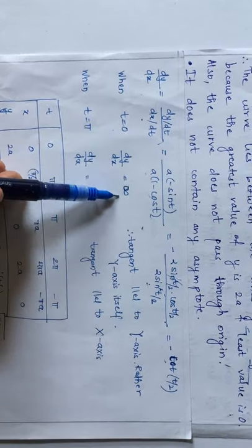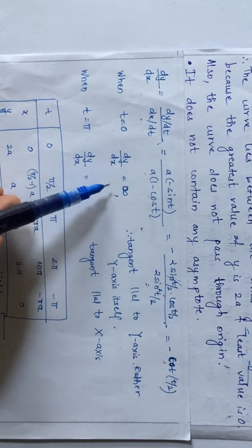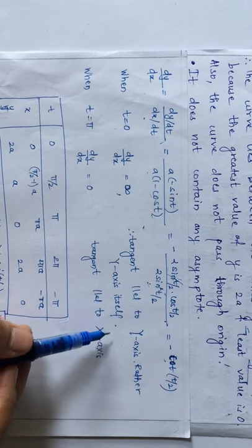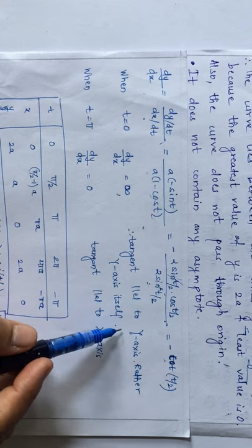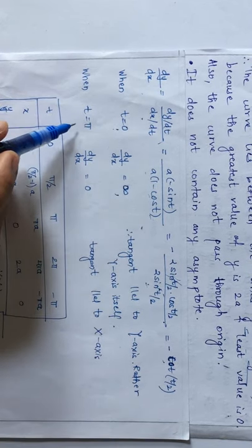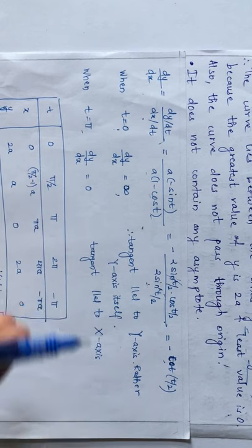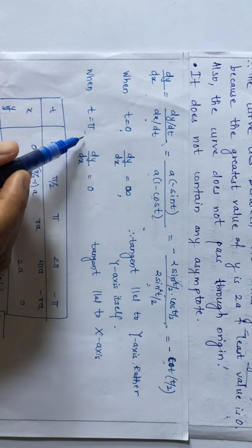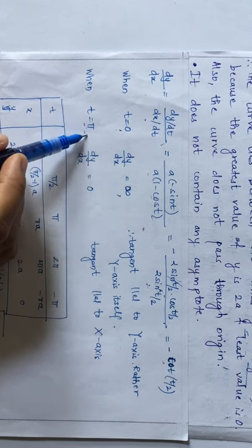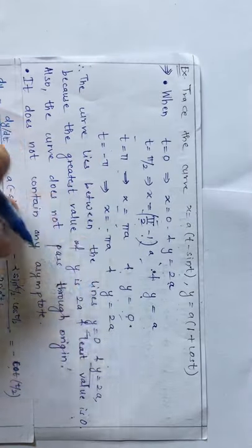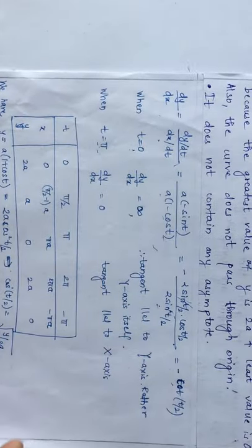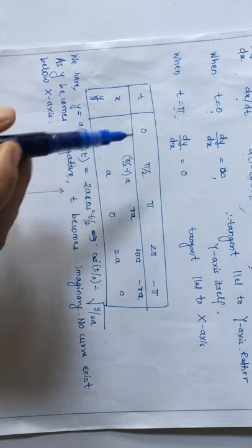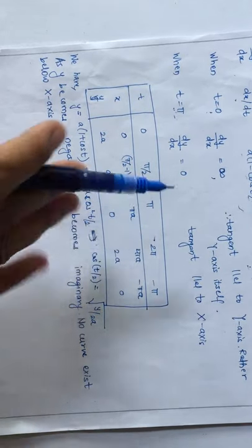When t = 0, dy/dx = ∞, so the tangent is parallel to the y-axis — in fact, it is the y-axis itself. When t = π, dy/dx = 0, so there is a tangent parallel to the x-axis at x = πa. We again build a table showing how x and y vary as t goes from 0 to 2π.